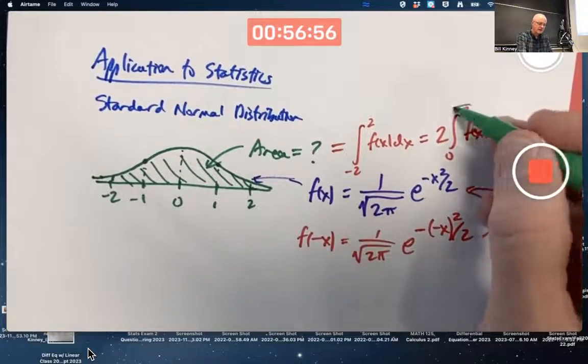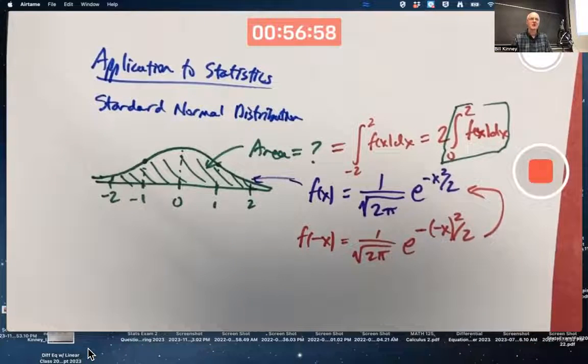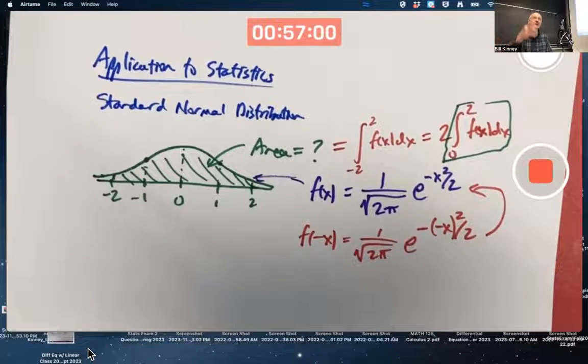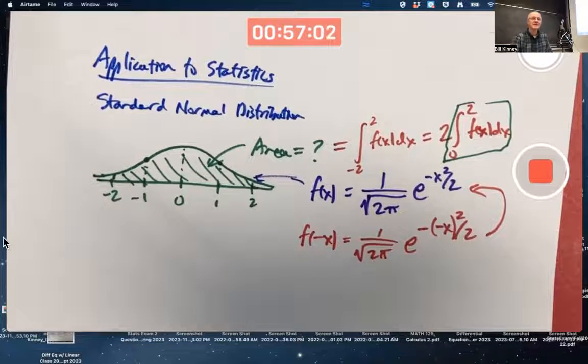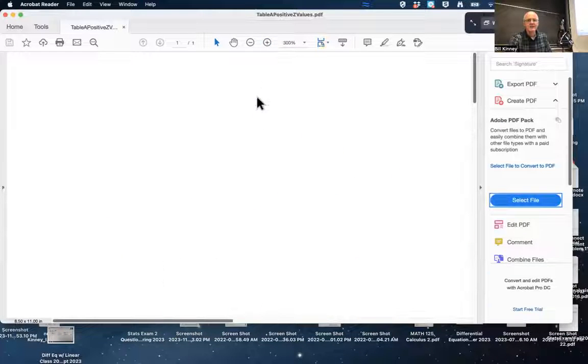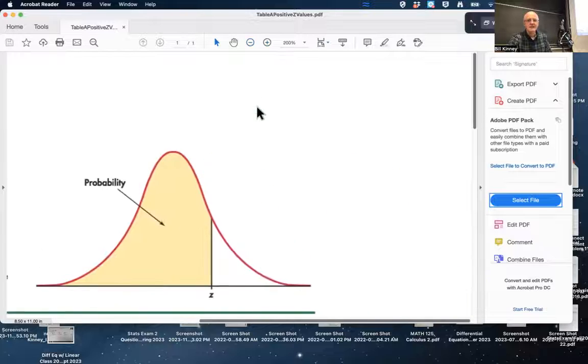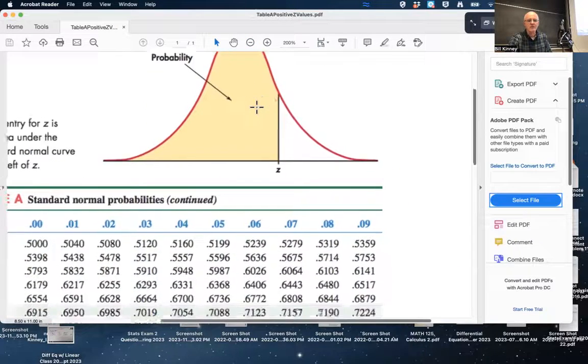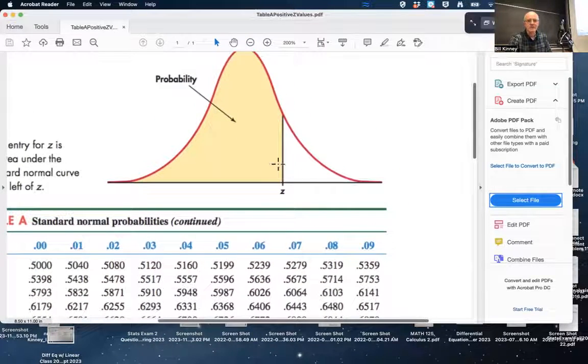This integral here is something you can look up on a table. In fact, I'll even show you the table I share with my stats students. Here's an example of a table that I use for my stats class. It is a standard normal curve. And those areas that are to the left of numbers are labeled probabilities, but you don't need to worry about that.